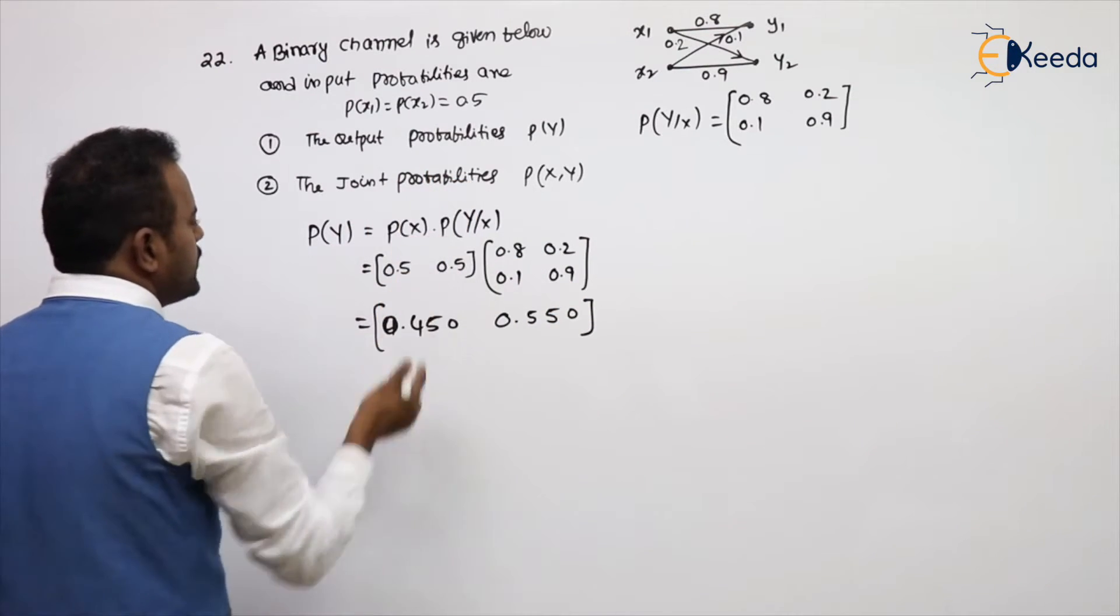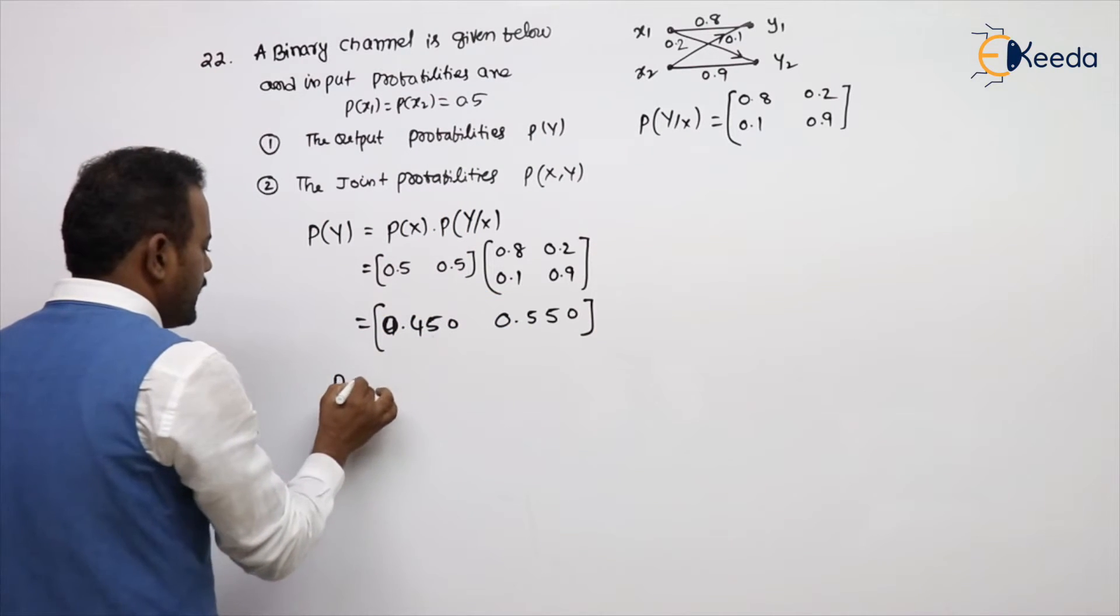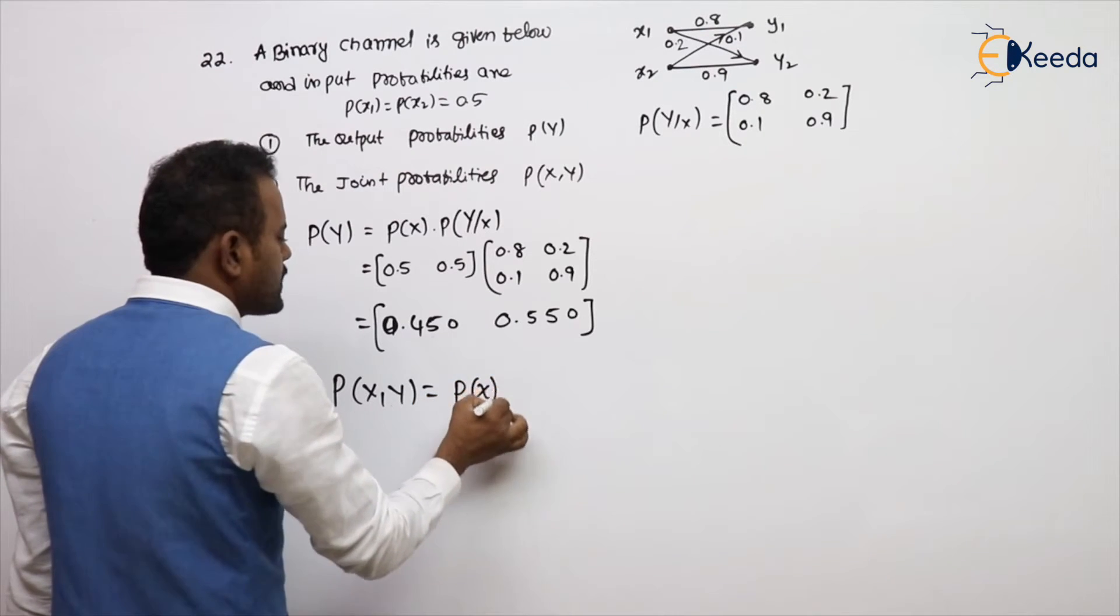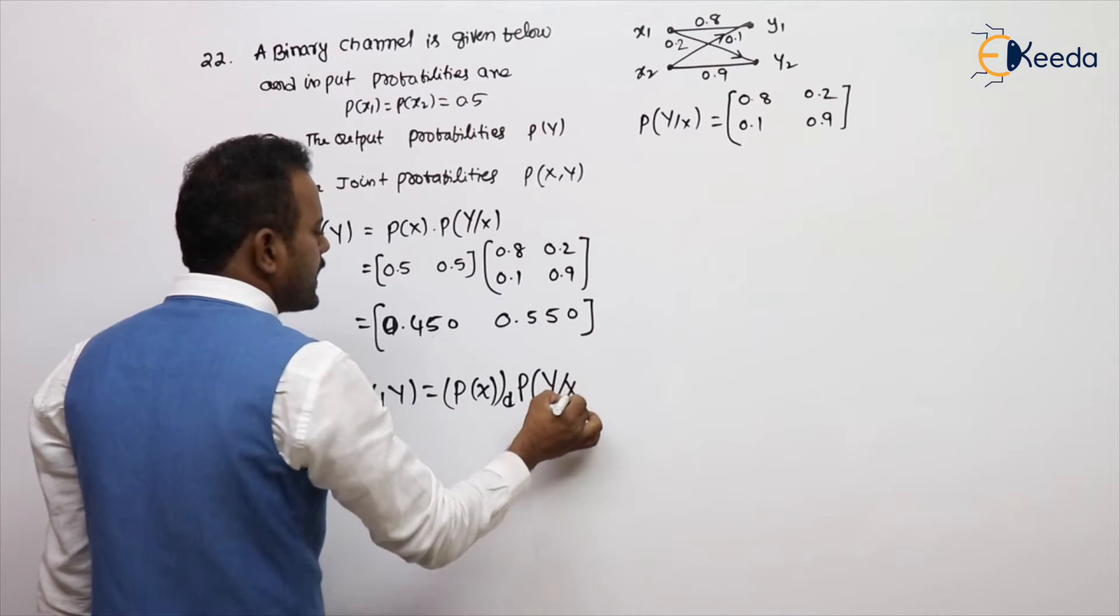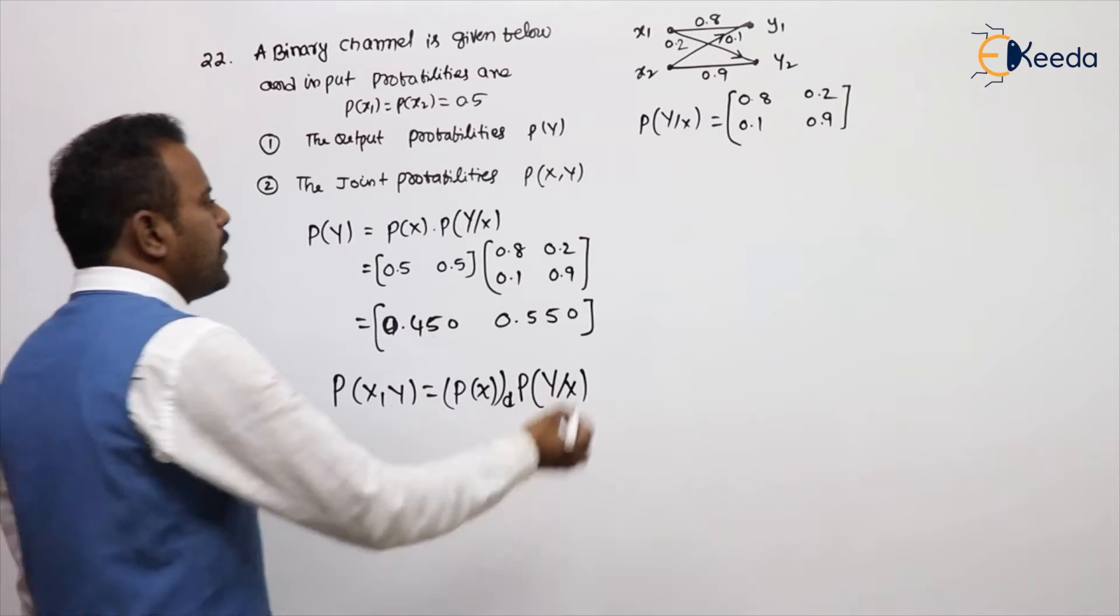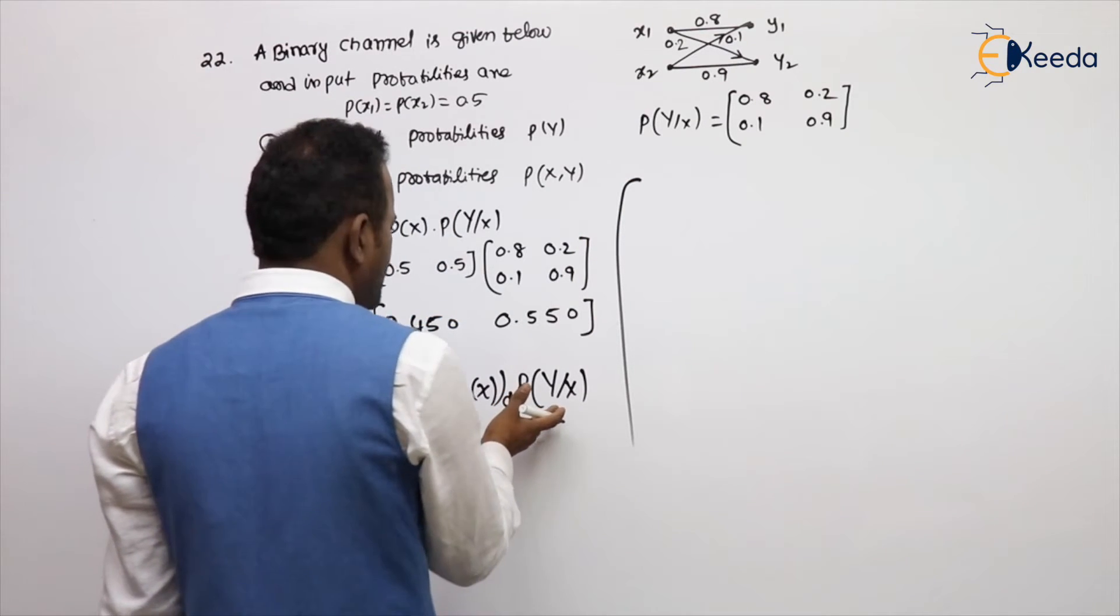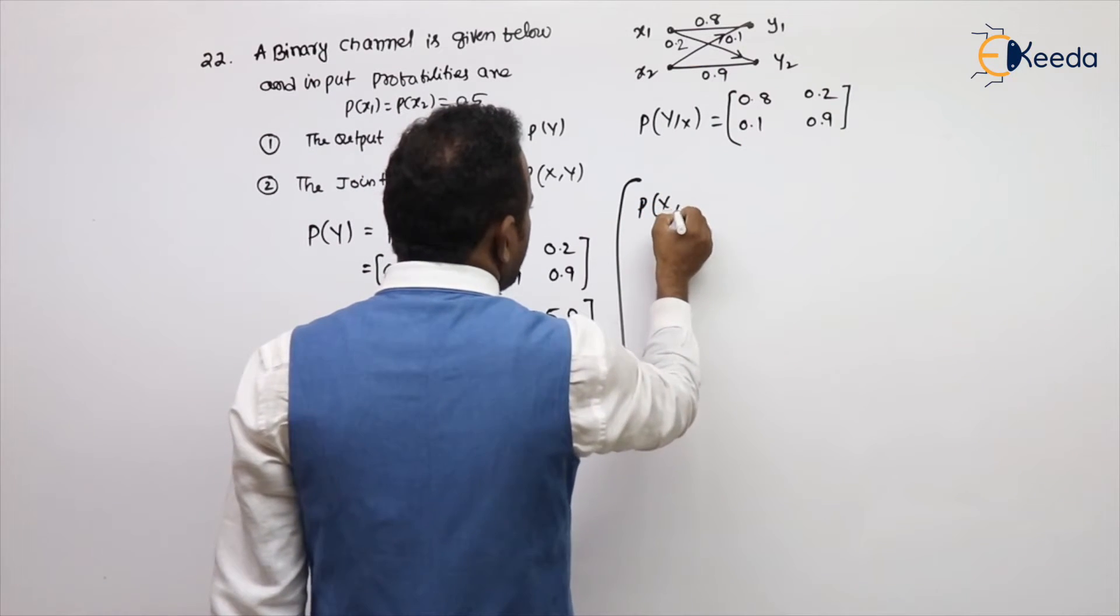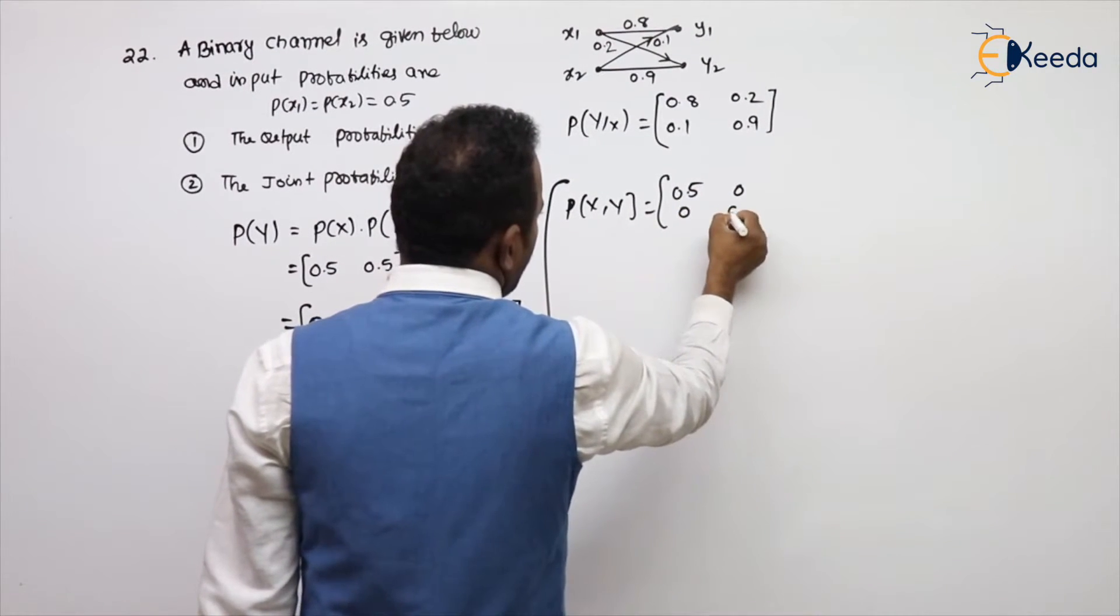Next, calculate the joint probabilities. What is the formula for joint probability? Joint probability P(xy) equal to P(x) diagonal into P(y|x). P(x) diagonal into P(y|x).